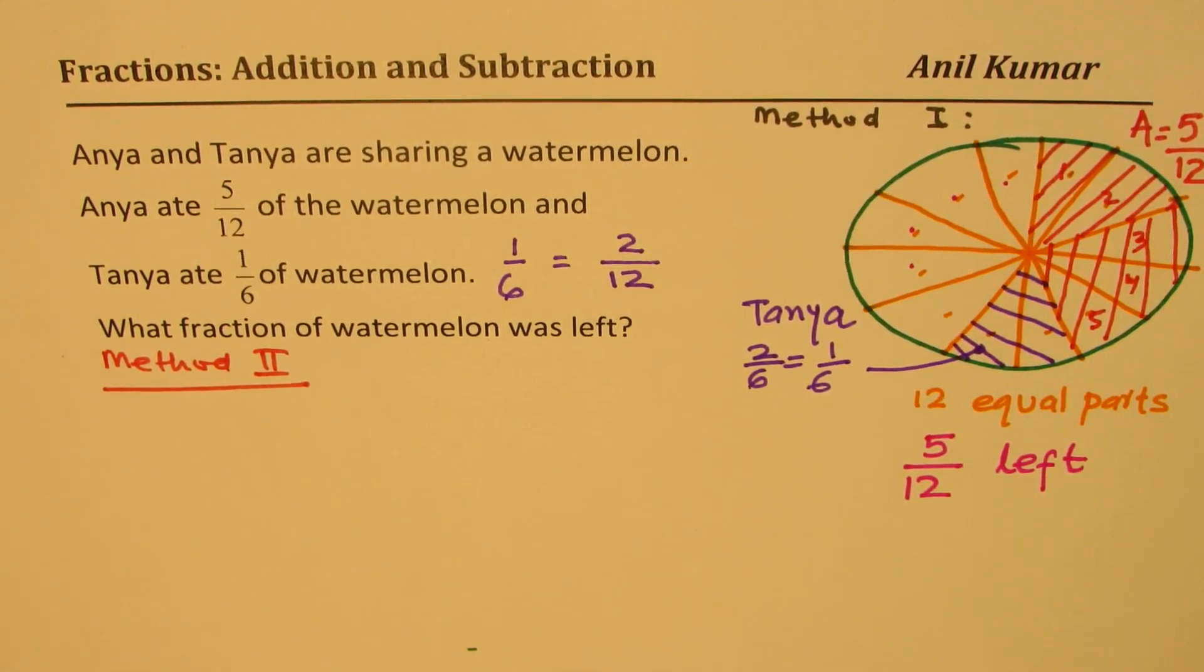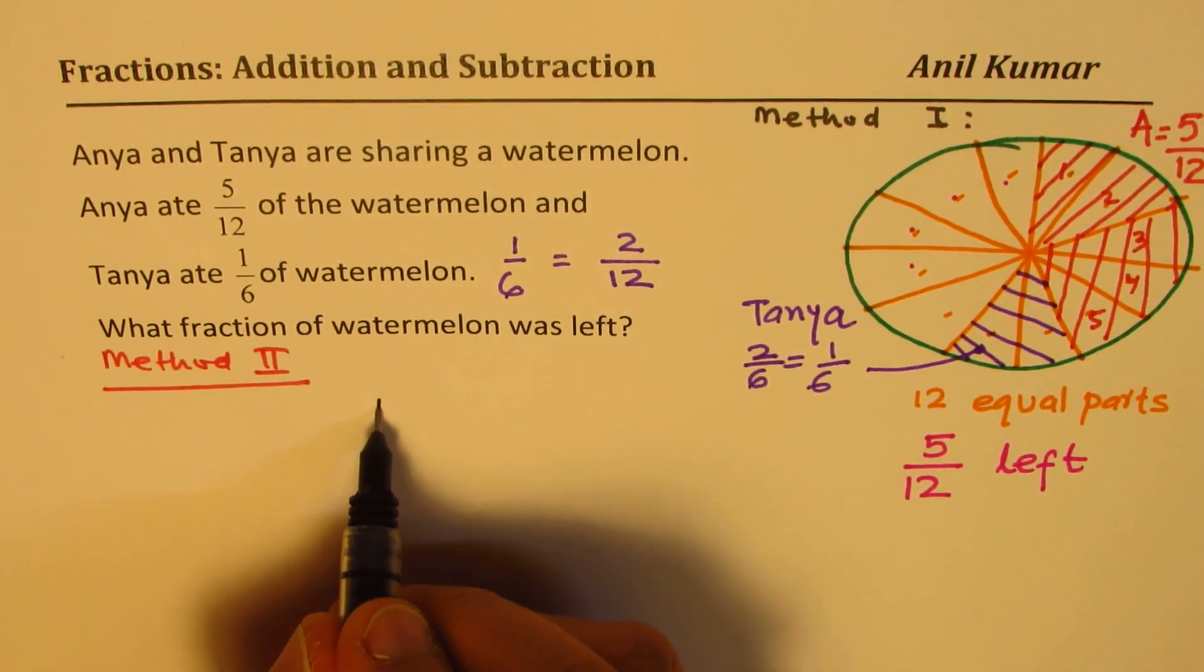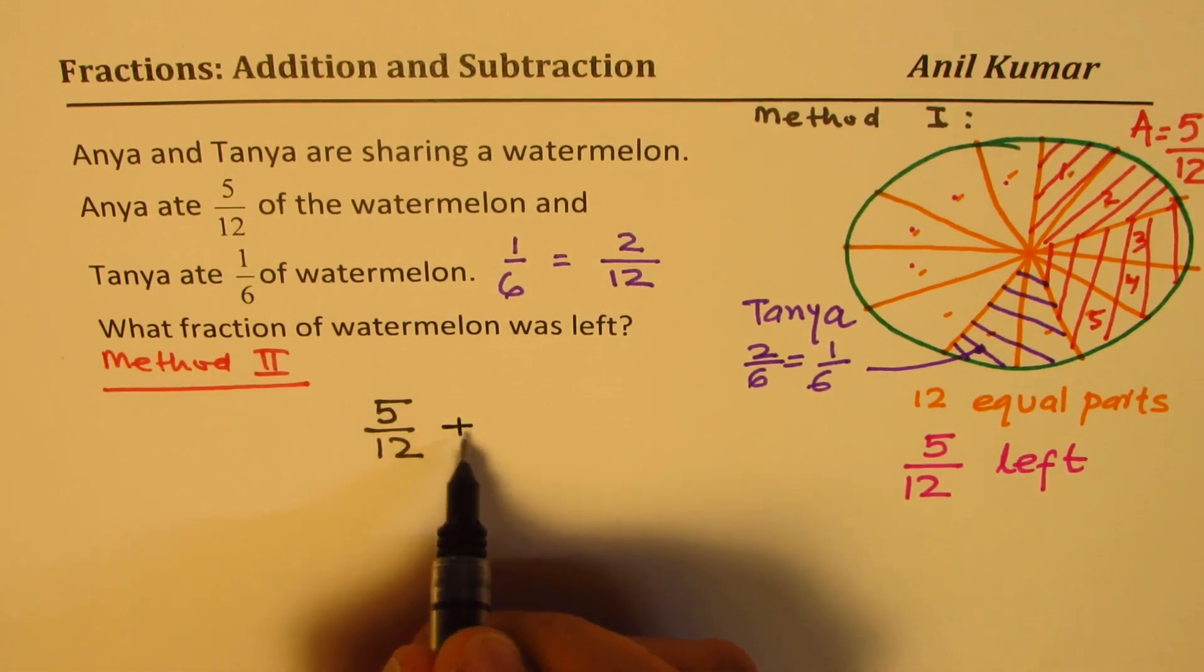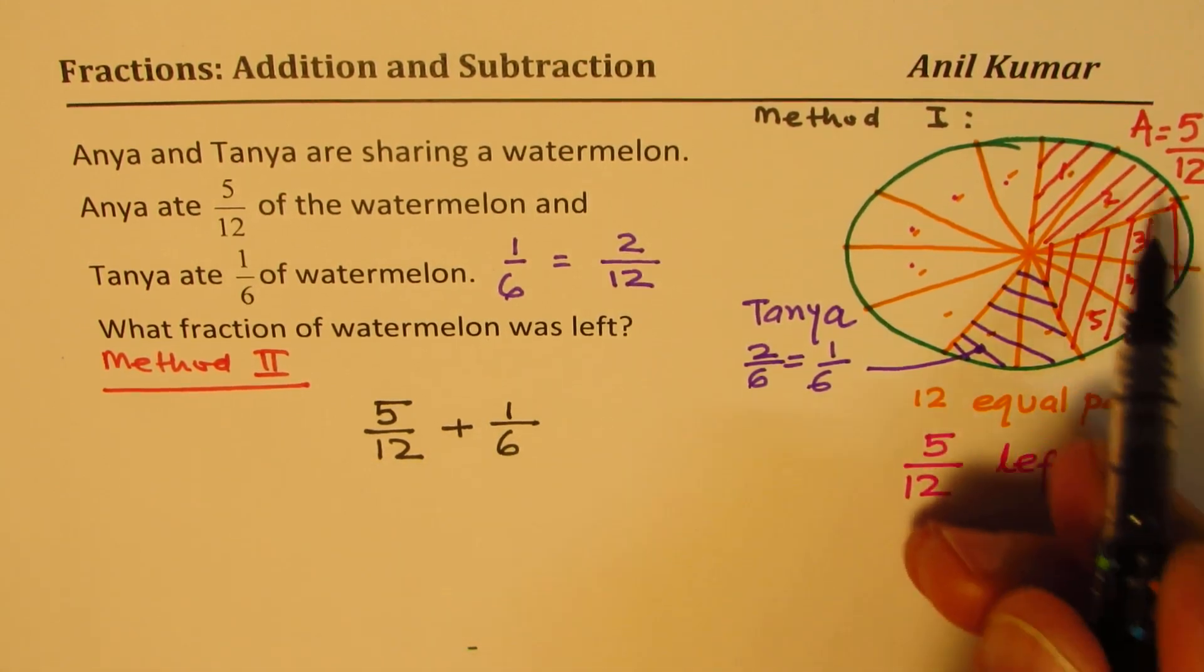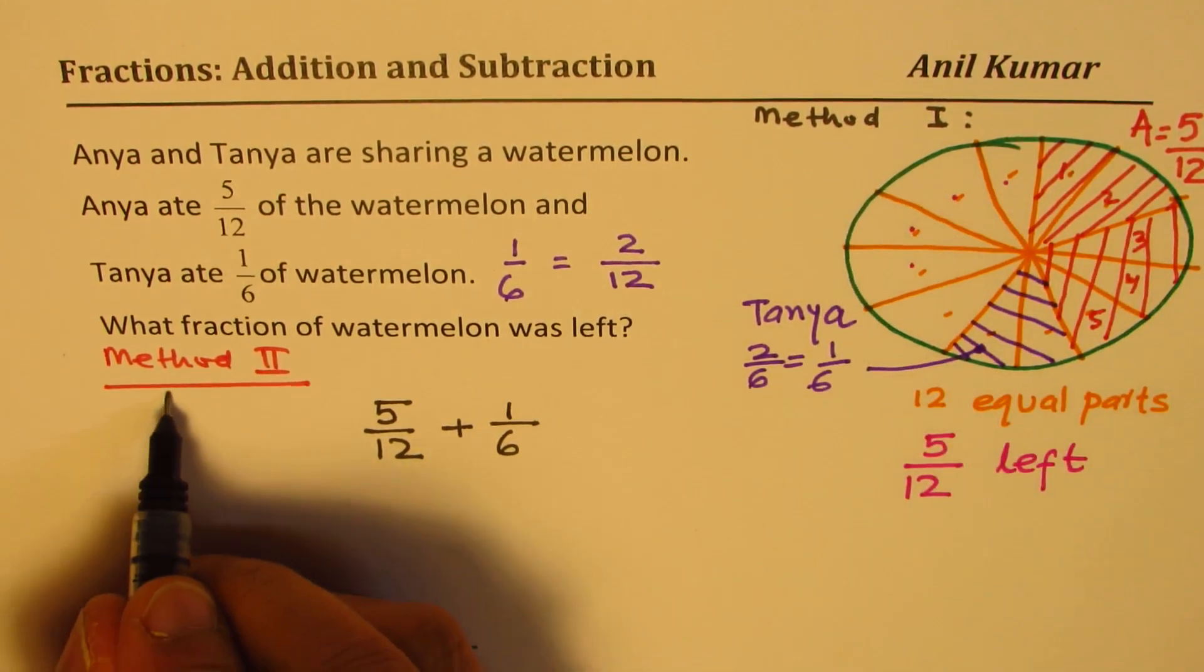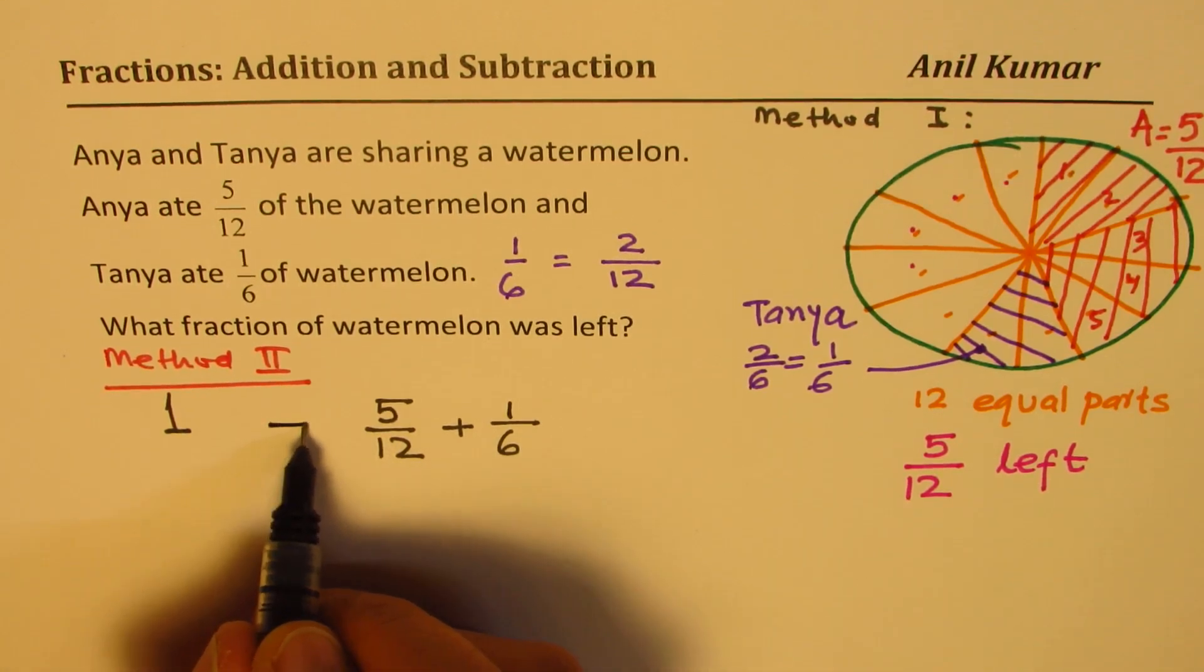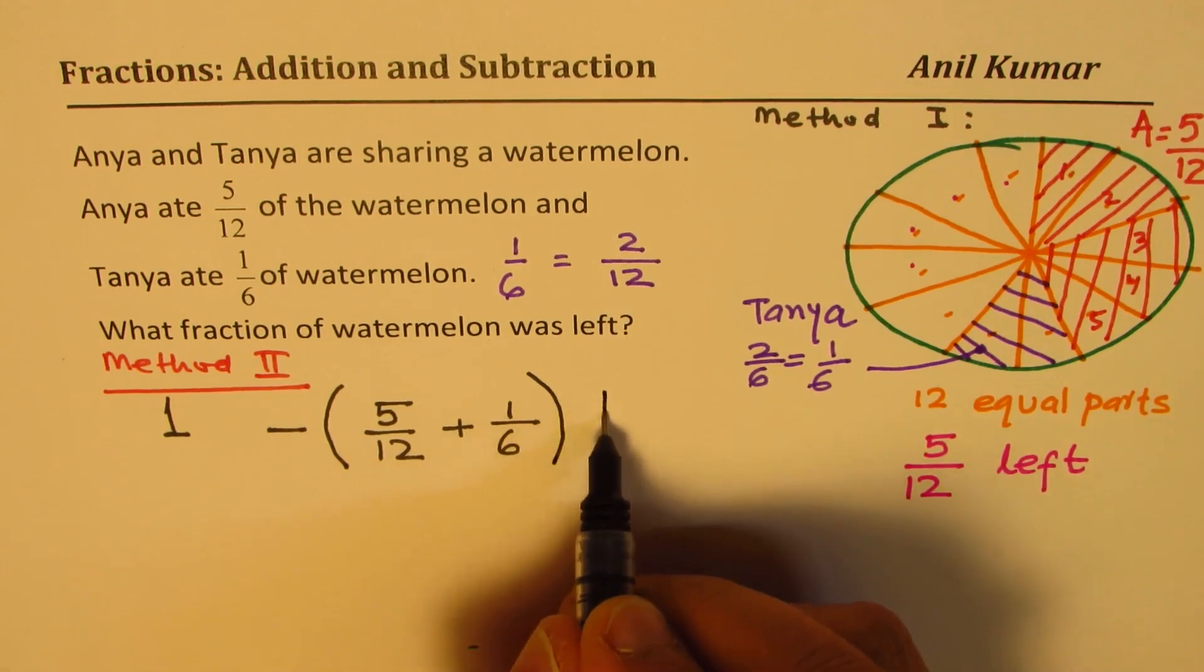So whenever we say they ate that much, that means Anya ate 5 out of 12 and Tanya ate 1 out of 6. They ate that much from one whole. One whole means one whole.